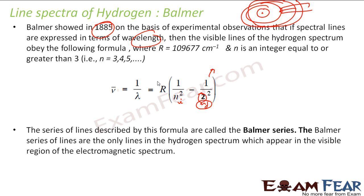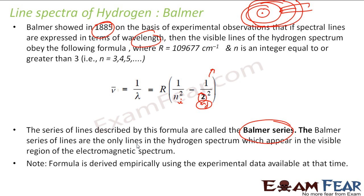The series of lines described by this formula is called the Balmer series, and they are the only lines which are visible. Please note this formula was derived empirically using experimental data available at that point of time — we did experiments and from that data we found this formula.